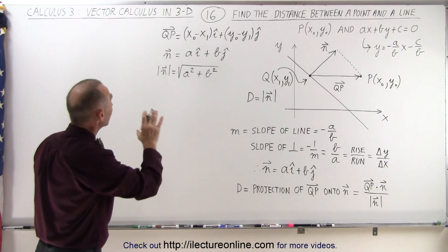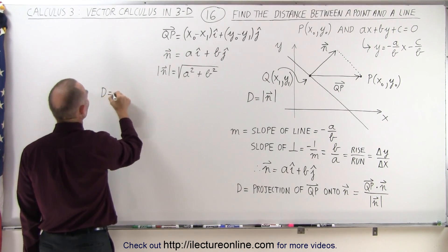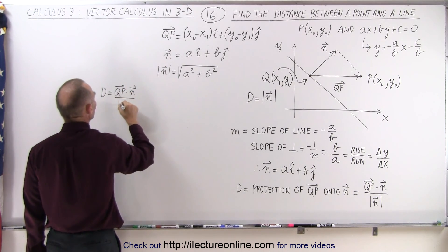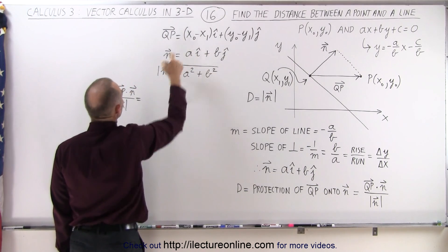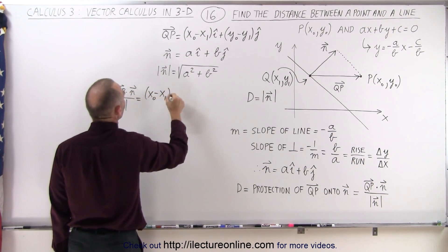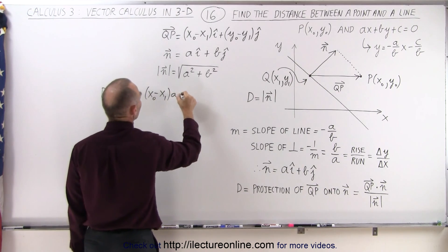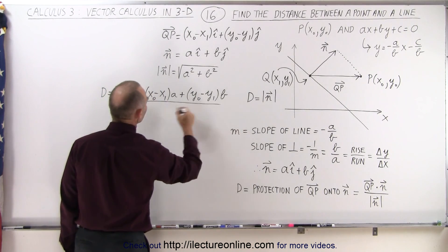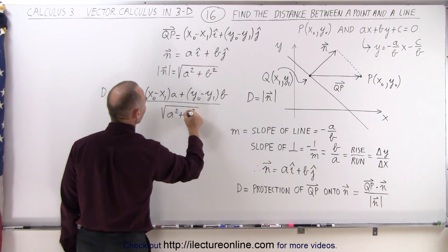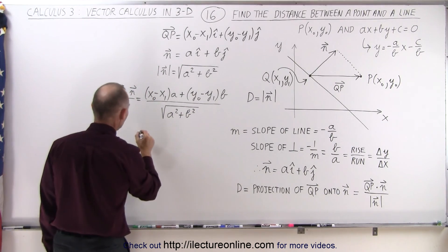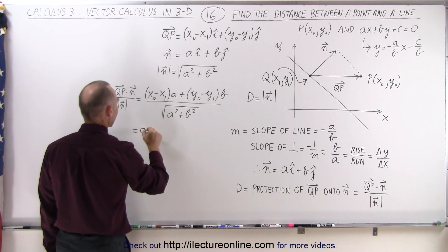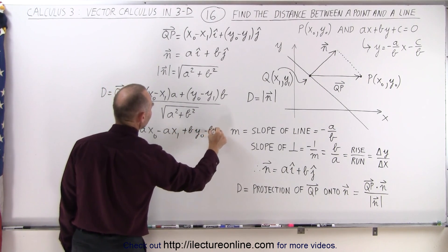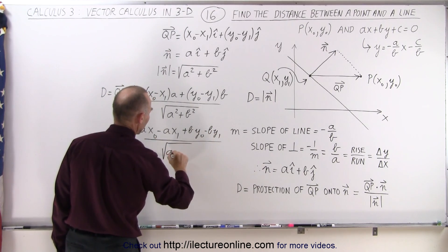Now we take the dot product. D equals the dot product of vector QP with vector N, divided by the magnitude of N. That equals (X-sub-naught minus X1) times A plus (Y-sub-naught minus Y1) times B, all divided by the square root of A squared plus B squared. Multiplying out, this becomes A times X-sub-naught minus A times X1 plus B times Y-sub-naught minus B times Y1, all divided by the square root of A squared plus B squared.